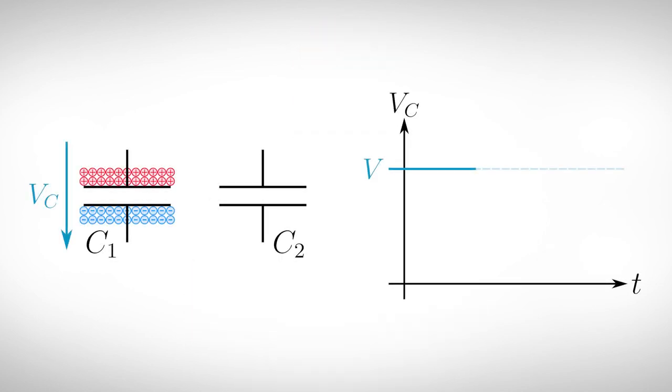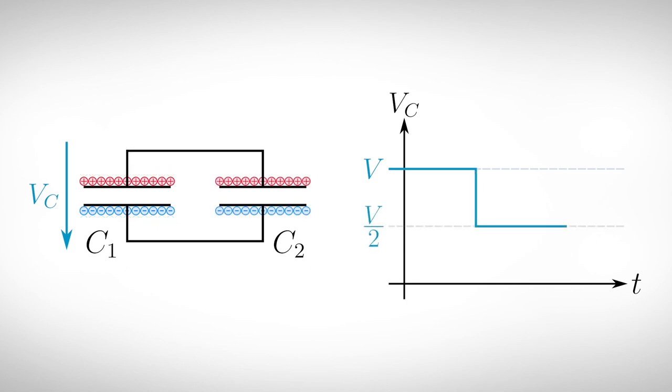The first storage element we want to take a closer look at is the capacitor. Let's assume we have a loaded and an empty capacitor. Both have the same capacitance C. If we connect the loaded capacitor C1 with the unloaded one C2, charges will flow from C1 to C2 until an equilibrium is reached. Since each capacitor now carries half of the charge, the original voltage at C1 is halved.